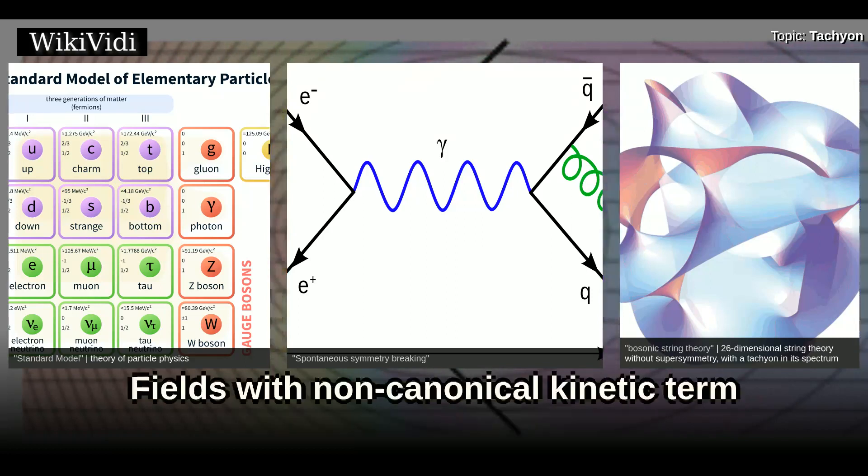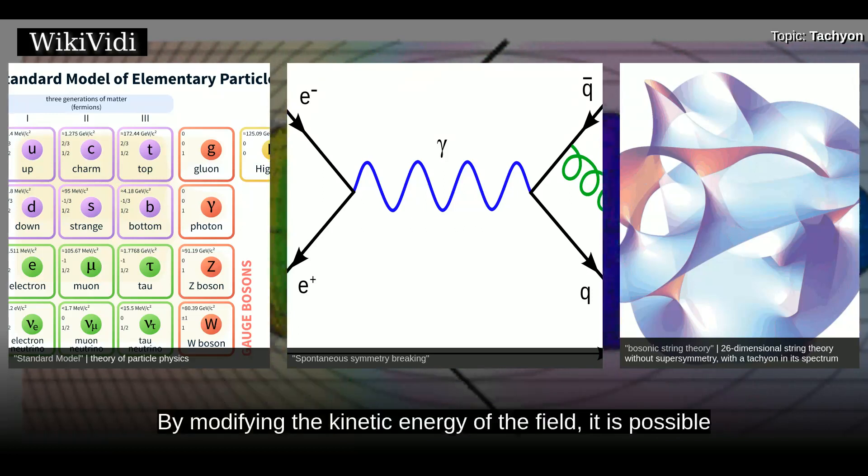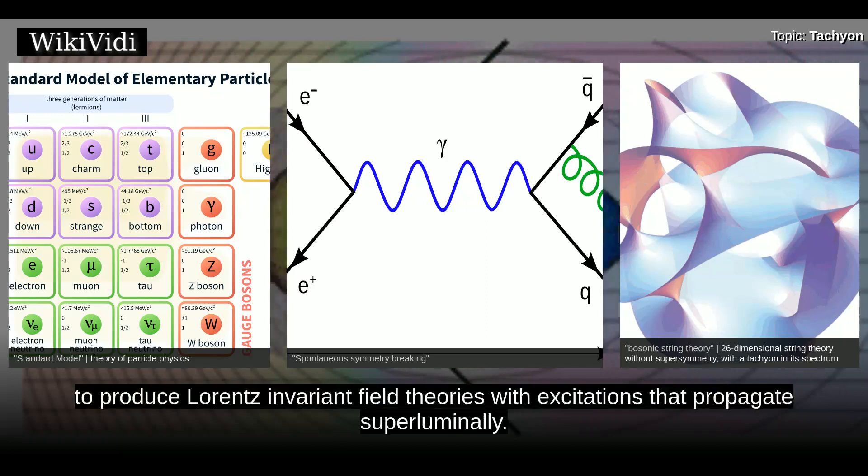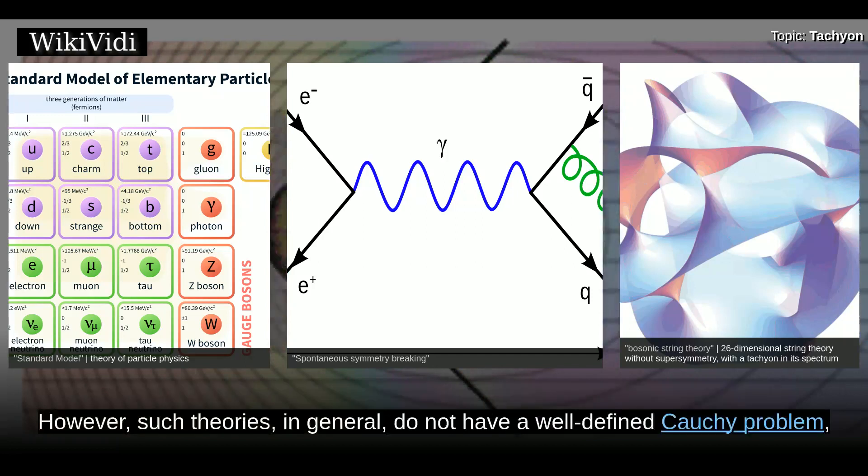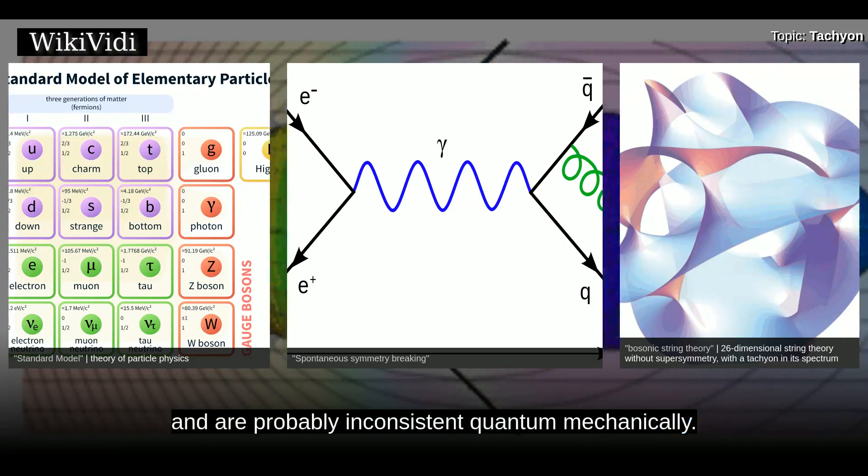Fields with non-canonical kinetic term. By modifying the kinetic energy of the field, it is possible to produce Lorentz invariant field theories with excitations that propagate superluminally. However, such theories in general do not have a well-defined Cauchy problem and are probably inconsistent quantum mechanically.